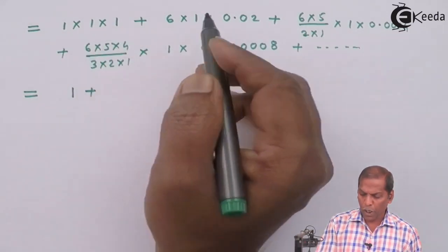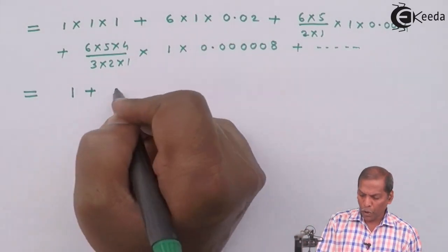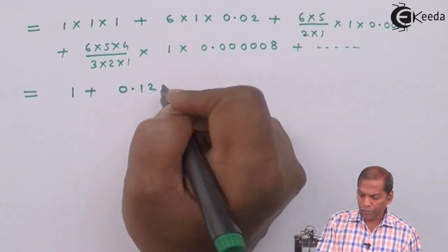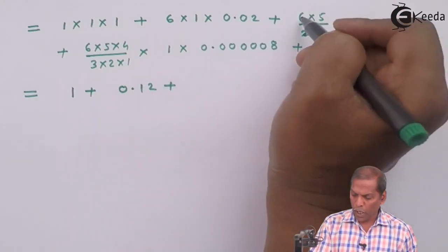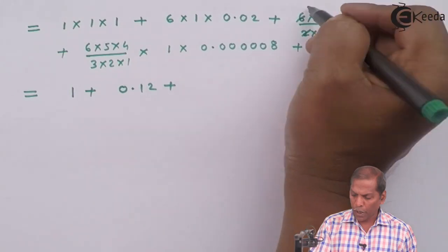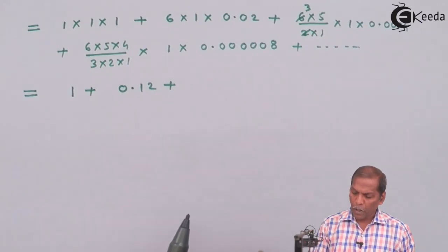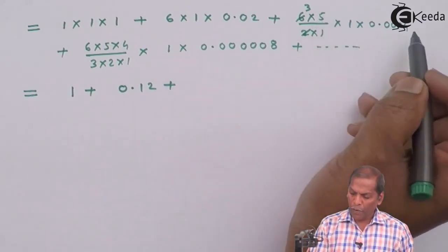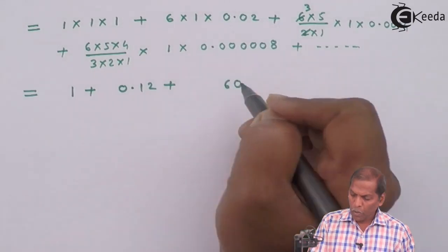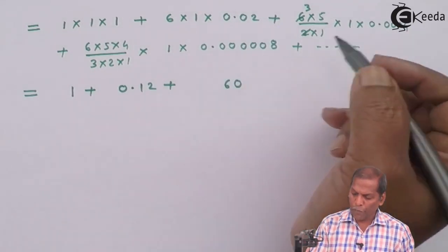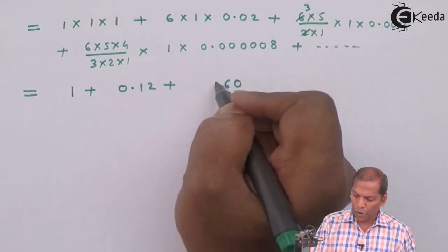So that equals to now 1 into 1 into 1 so we get 1 plus 6 into 0.02 so we get 0.12, plus now 2 ones are 2 and 2 threes are 6 so 3 into 5 is 15, 15 multiply by 4 gives us 60.